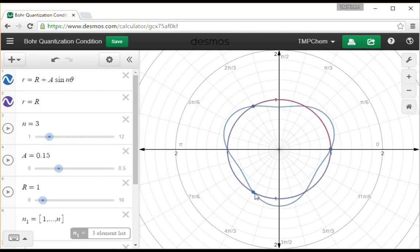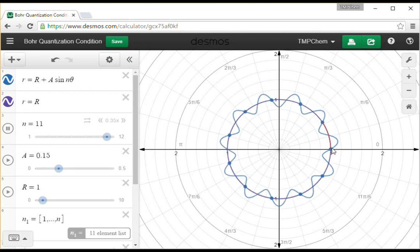So n equals 3, you complete three full wavelengths. As long as this n is some integer, you get a case where the wave is a standing wave and it can exist on the circle. The end meets up with the beginning and everything is fine. The wave doesn't interfere with itself or cancel itself out.